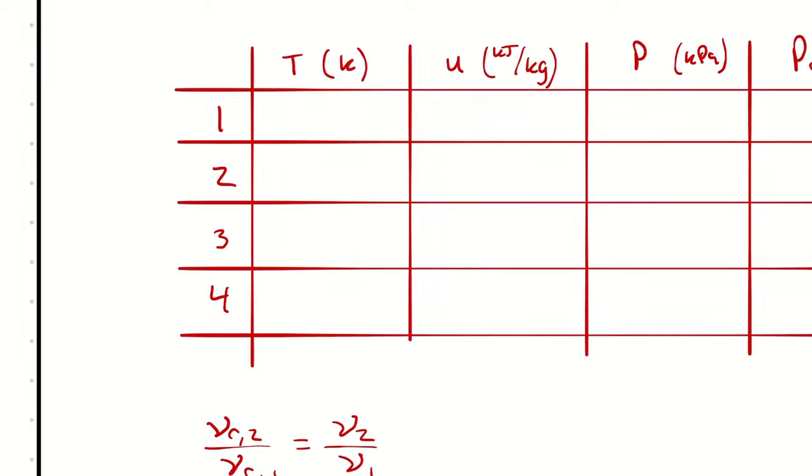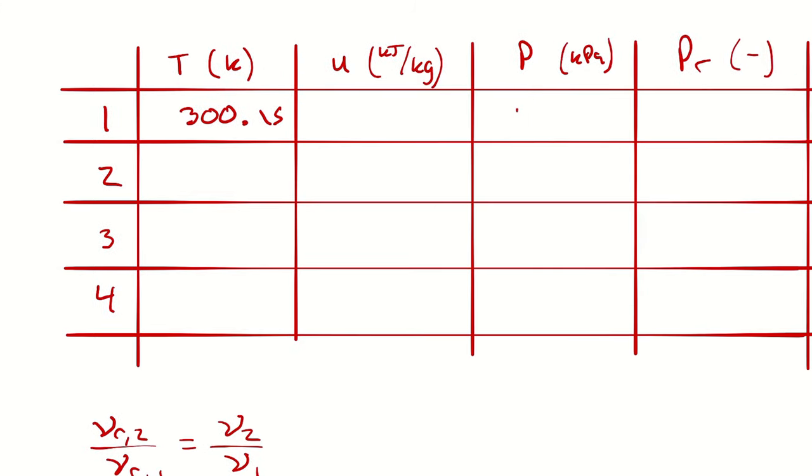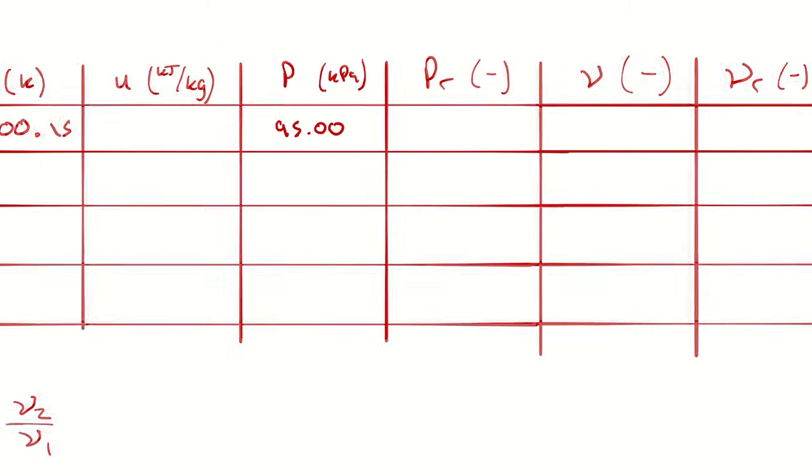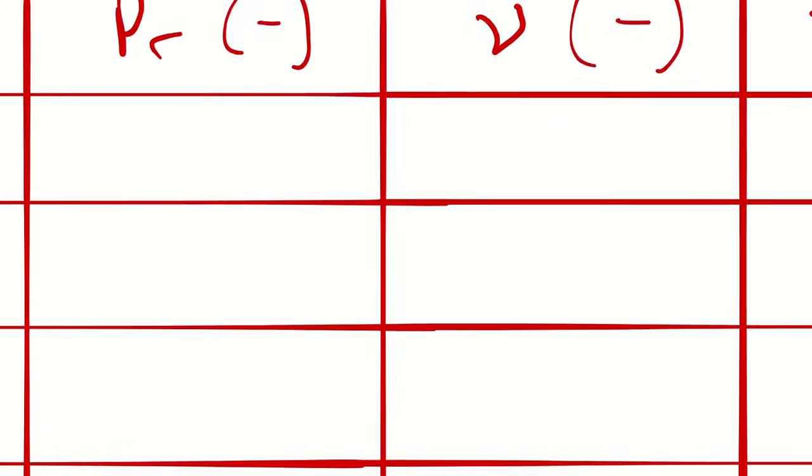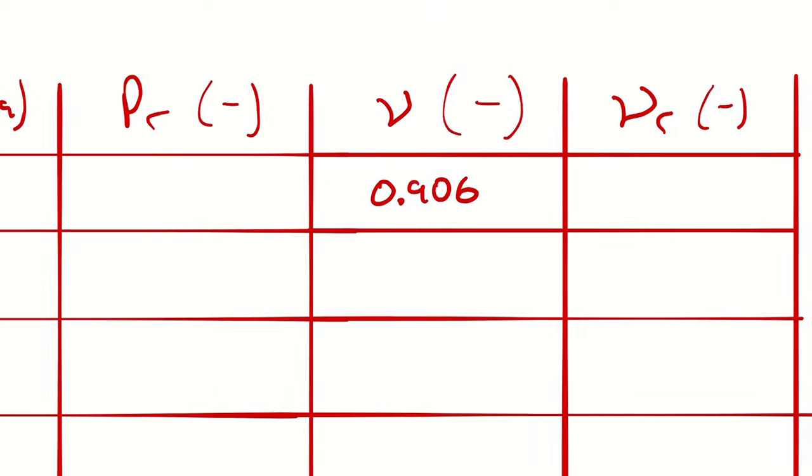For an isentropic process, when we don't have the ability to assume constant specific heats, our isentropic ideal gas equations are Vr2 over Vr1 equals V2 over V1, and Pr2 over Pr1 equals P2 over P1. Vr and Pr are a measure of reduced volume and reduced pressure, normalized parameters relative to the critical point. I will populate what we know: 300.15 as temperature at state 1, and 95 kilopascals for state 1, and using the ideal gas law we can calculate the specific volume.